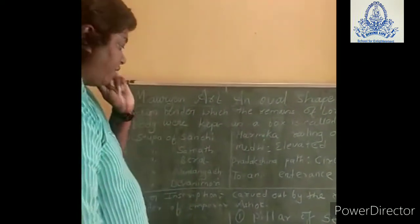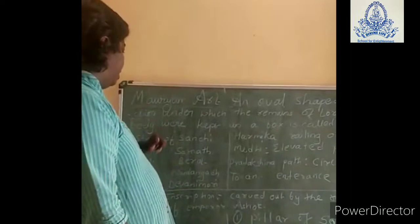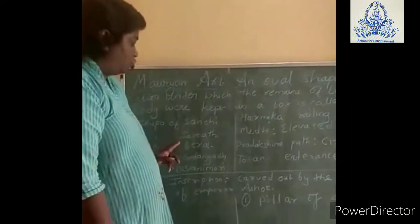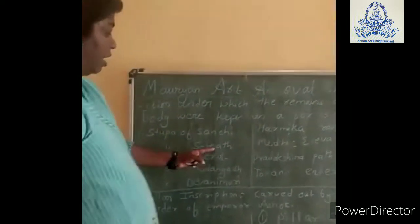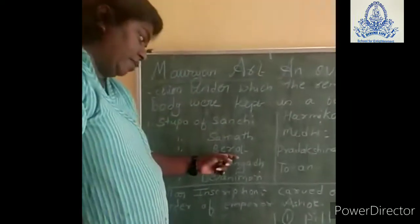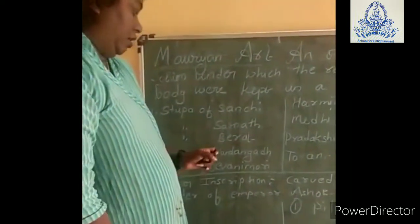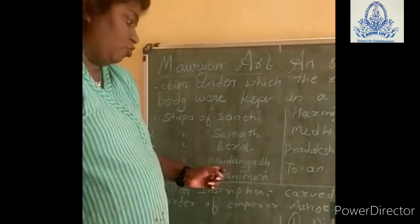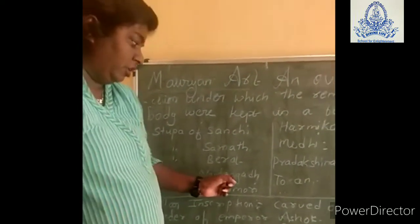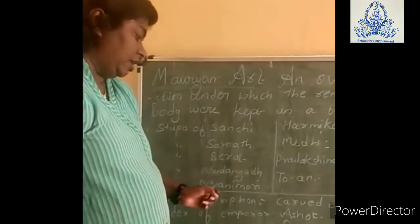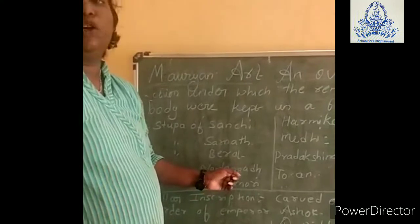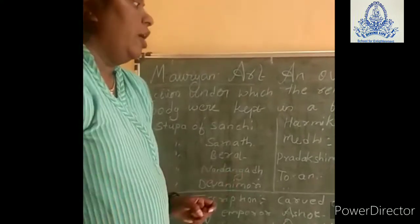We have five main stupas: the stupa of Sanchi, the stupa of Sarnath, the stupa of Bharhat, the stupa of Nandiyangad, and the last is Devamuri, which is in Gujarat.